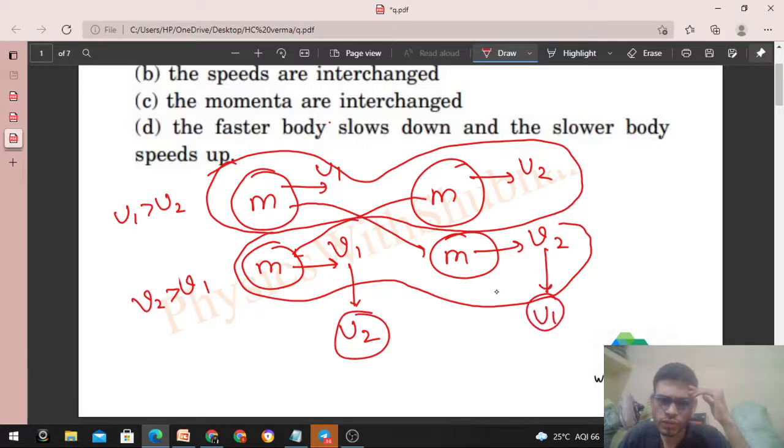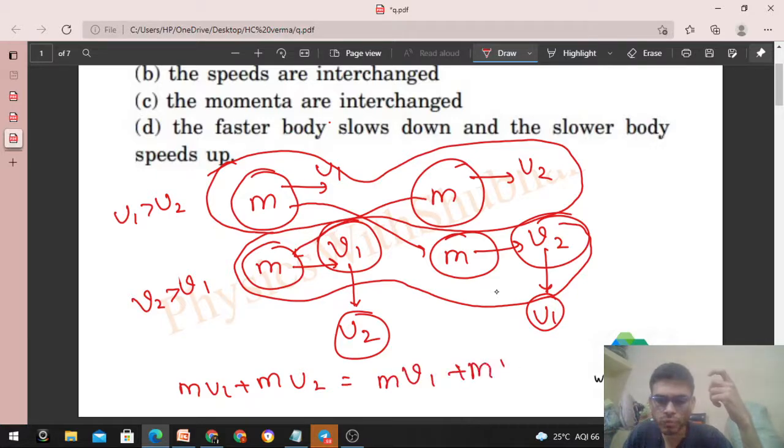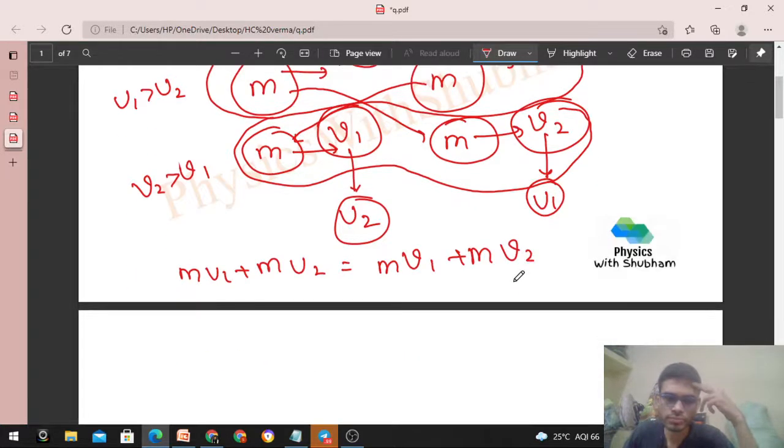Let's find out the value of V1 and V2 first. First equation will be from conservation of momentum: initial momentum M U1 plus M U2 should be equal to final momentum M V1 plus M V2. From here you can check: U1 plus U2 equals V1 plus V2.